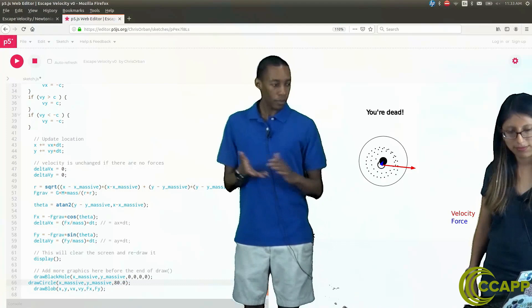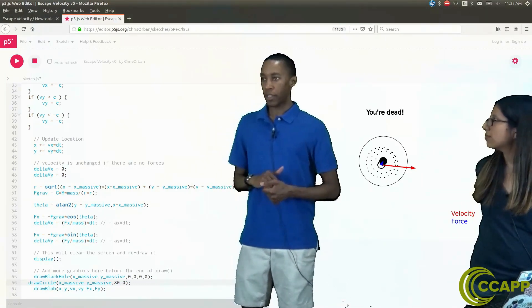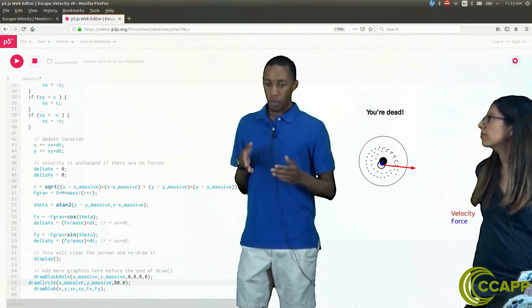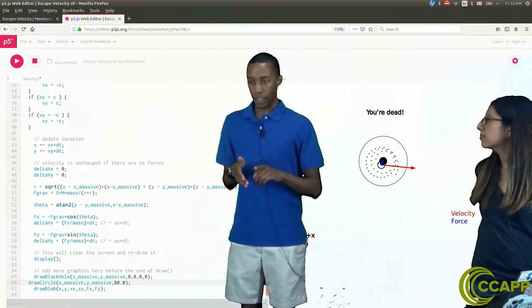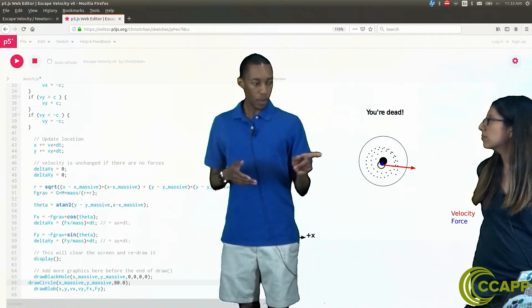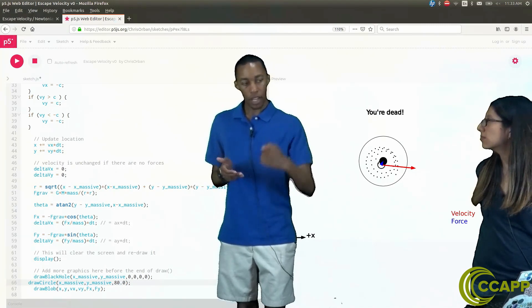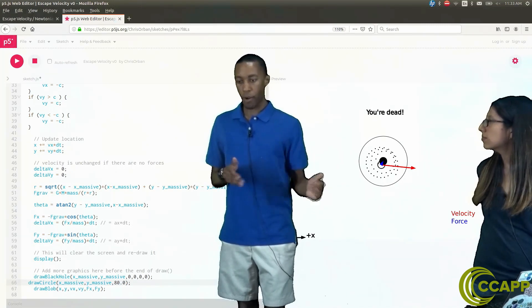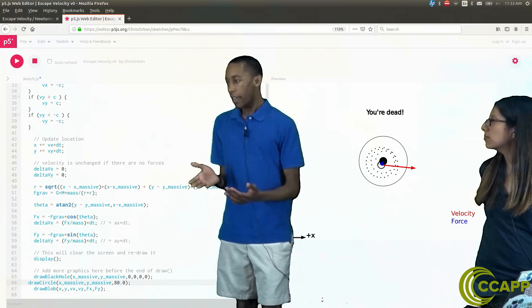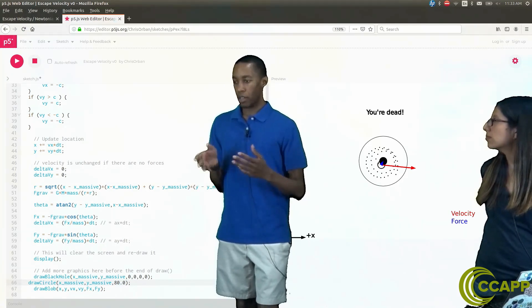For example, consider we're pretending that this particle is light. If we were to launch it from inside the event horizon, on the code here you saw that it could escape the horizon, come back, and either orbit or crash. But in real life, time dilation would occur.